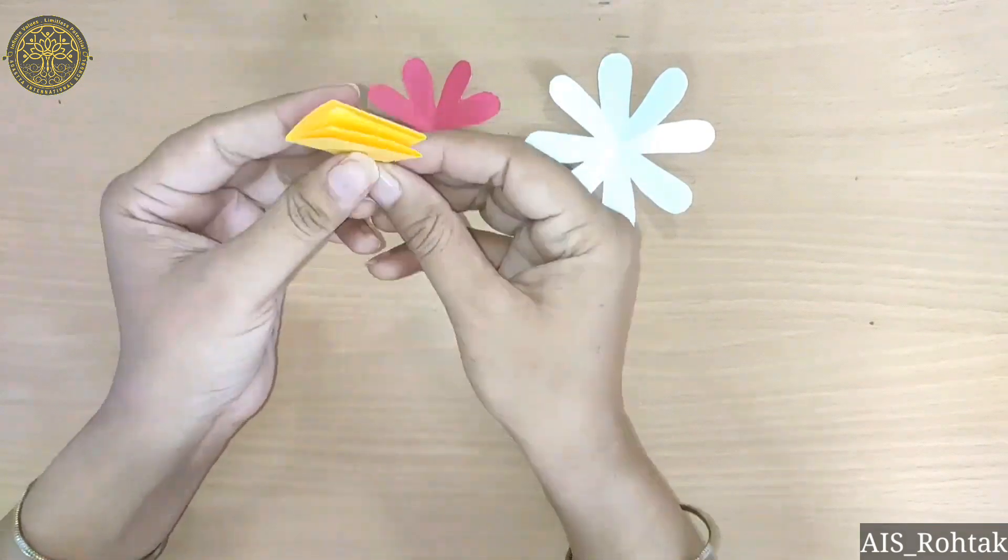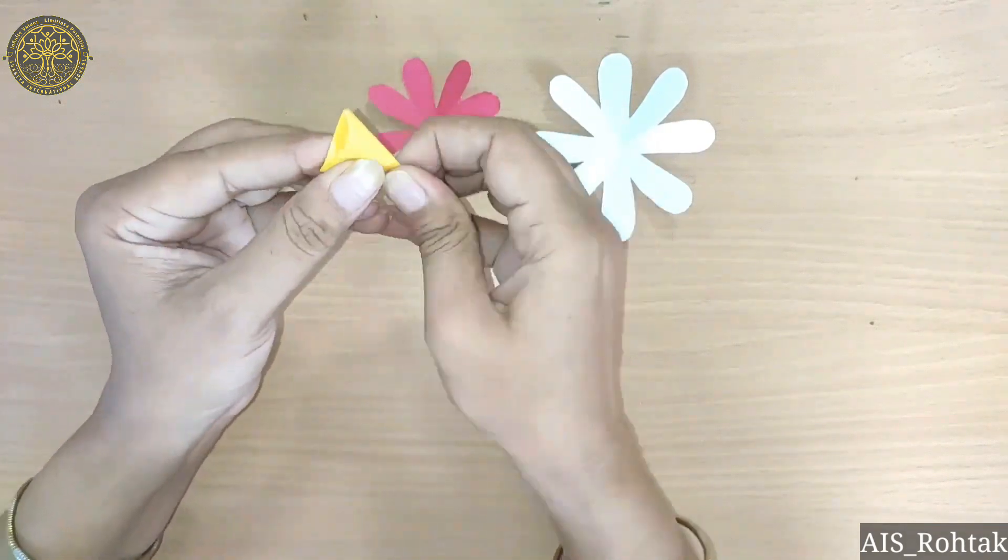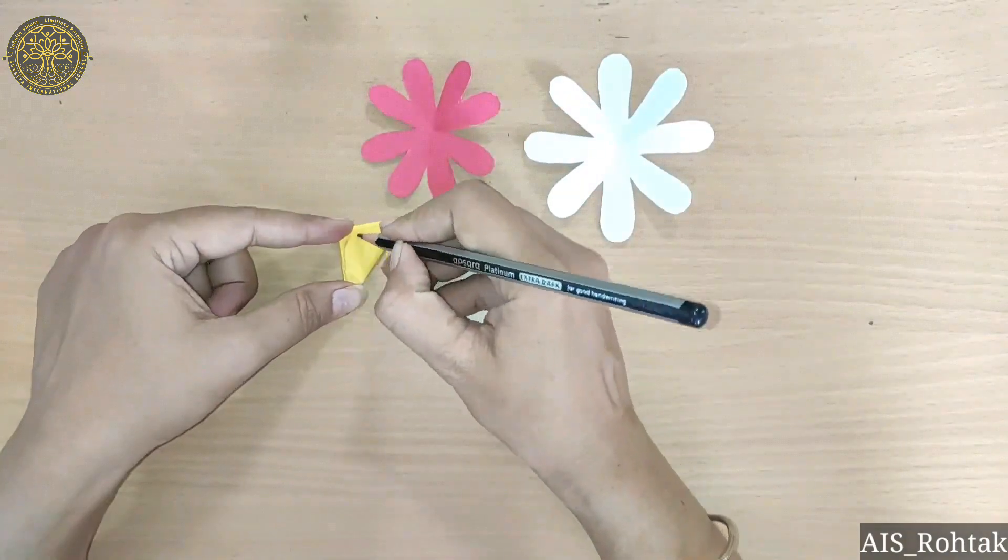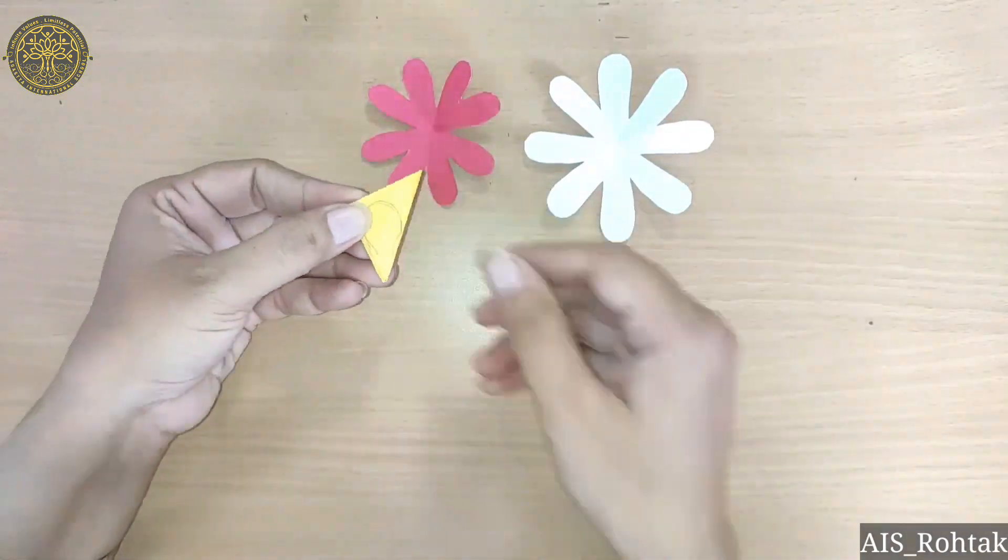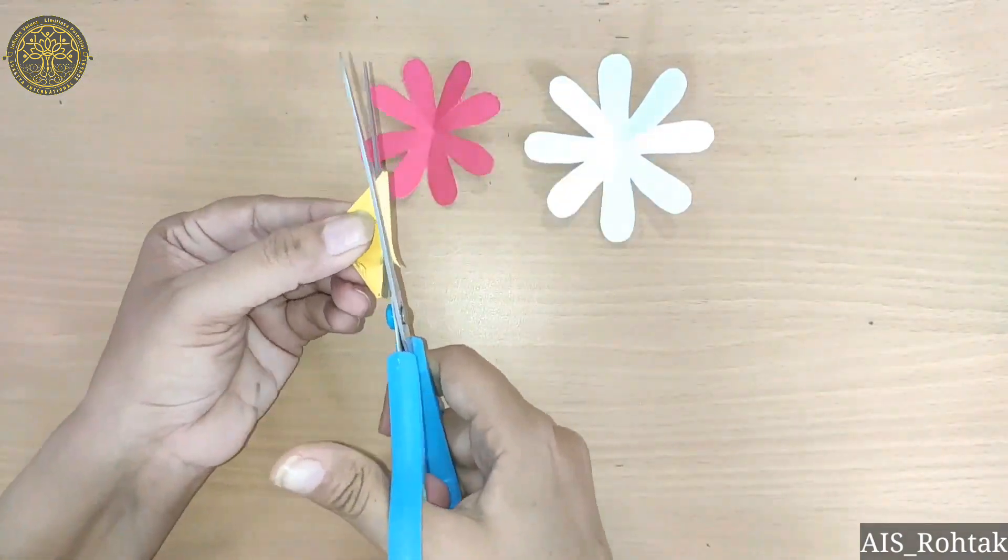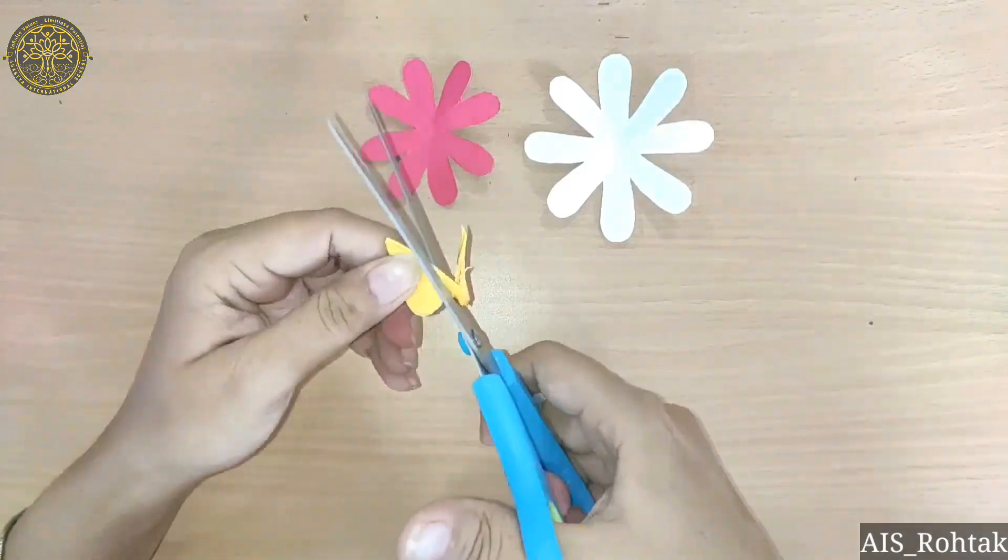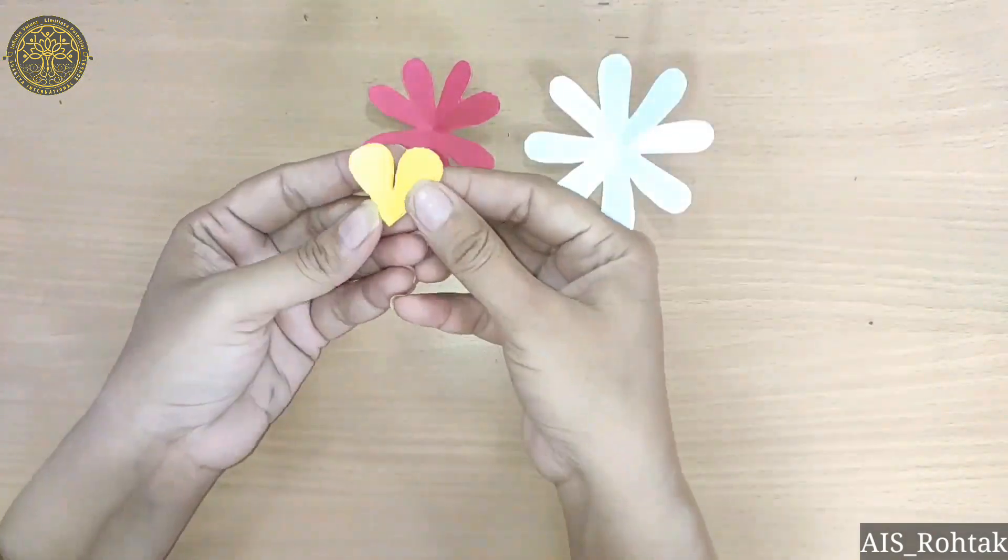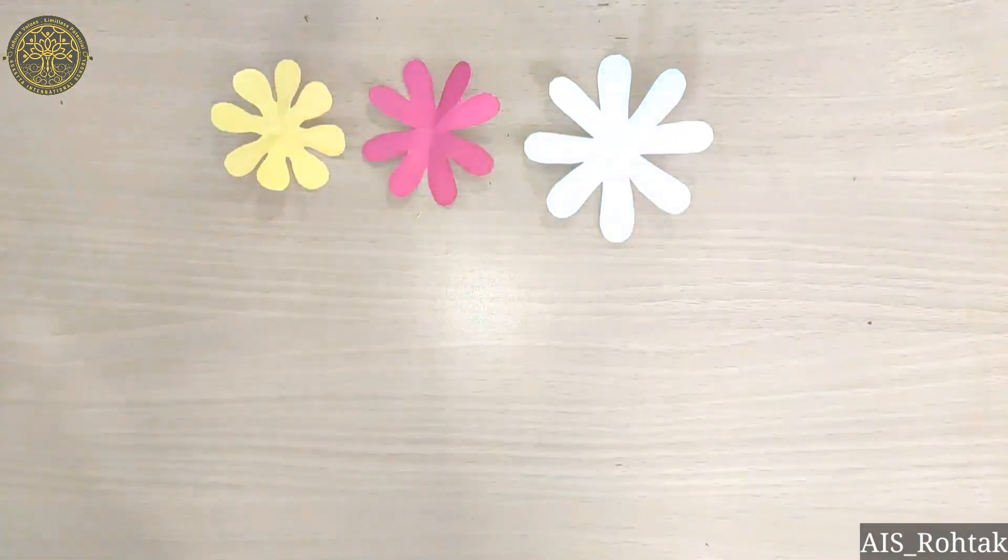Now same, we have to fold with the yellow color. And on this one we have to draw different petals, a big round shape, and cut it. And see this is the different shape.